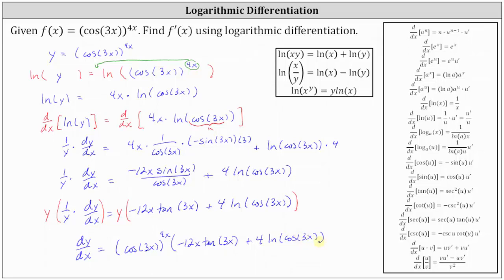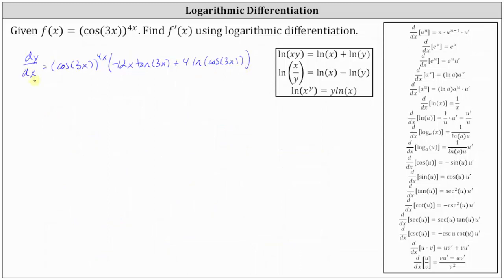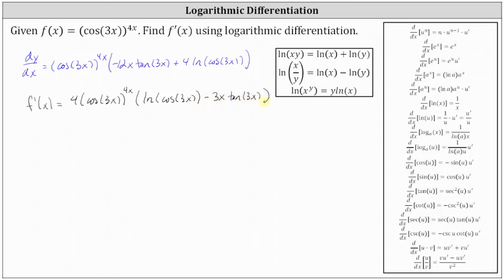Now we replace dy dx with f prime of x and factor out the greatest common factor of 4 from the parentheses. This gives us f prime of x equals 4 times cosine of 3x raised to the power of 4x, times the quantity natural log of cosine 3x minus 3x tangent 3x. We'll leave the derivative in this form. I hope you found this helpful.